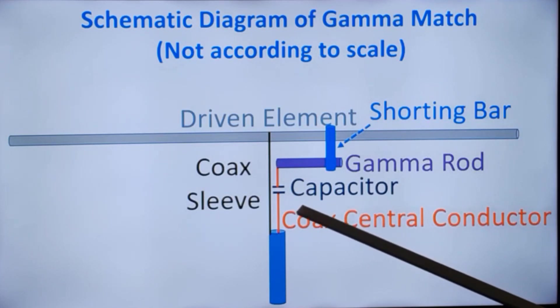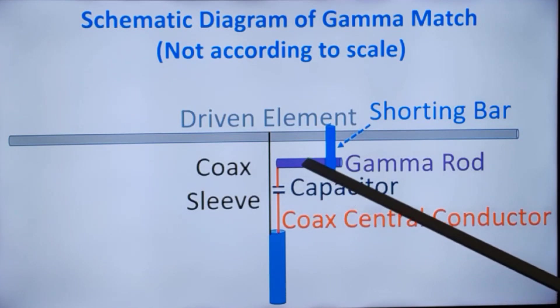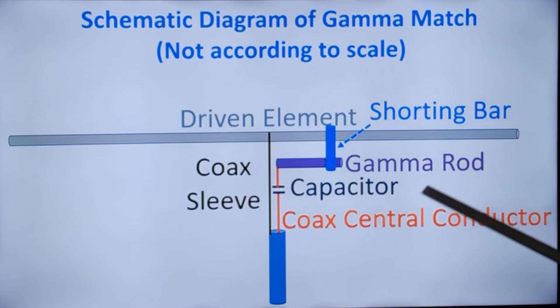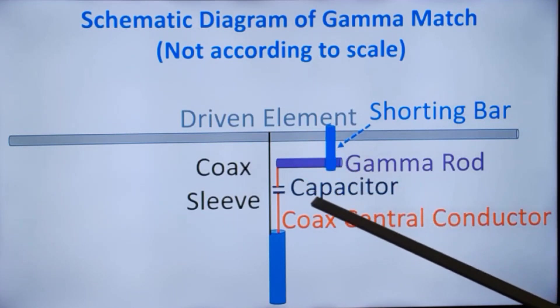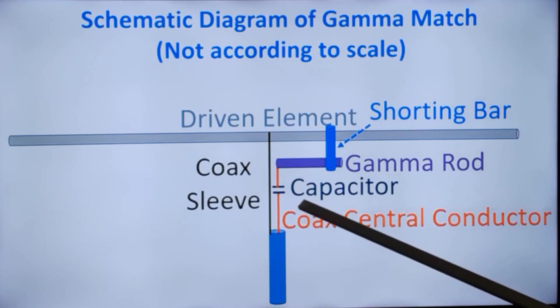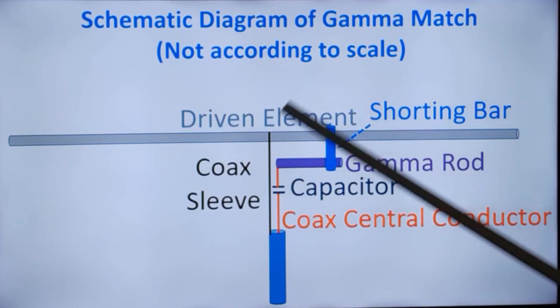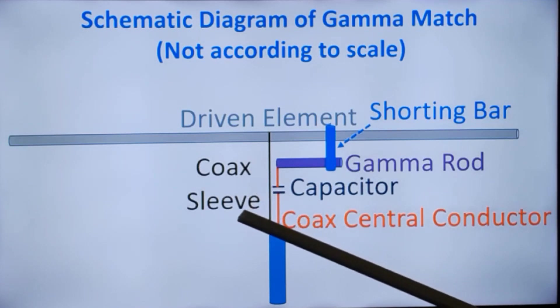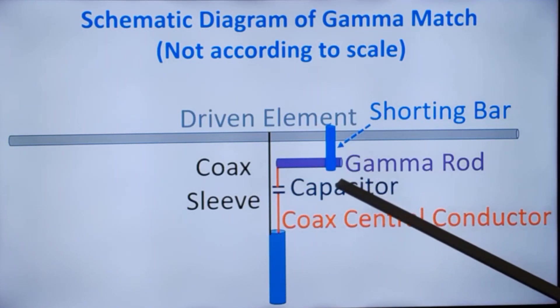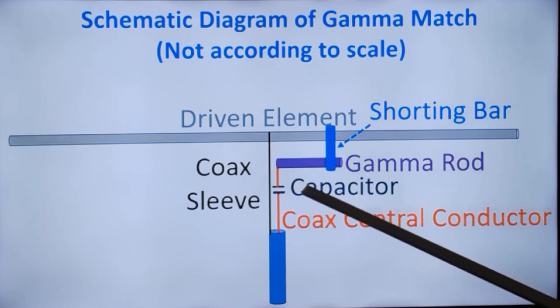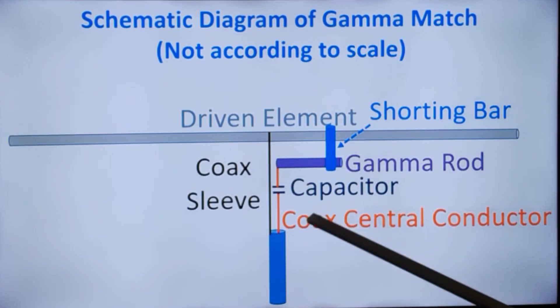What is usually done is that you calculate the approximate capacitance needed based on seven picofarads for about one meter length. Usually you place a variable capacitor here, tune the antenna for the correct frequency, find out the capacitance of this capacitor, and then replace it with a fixed value capacitor. That is one method of tuning the antenna.